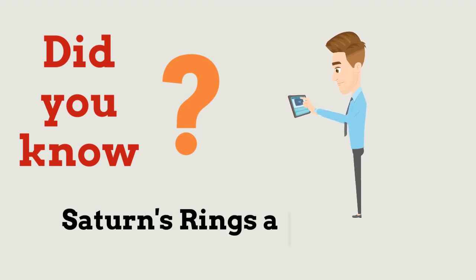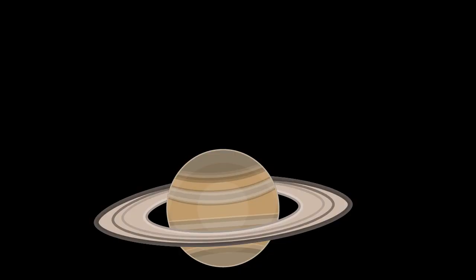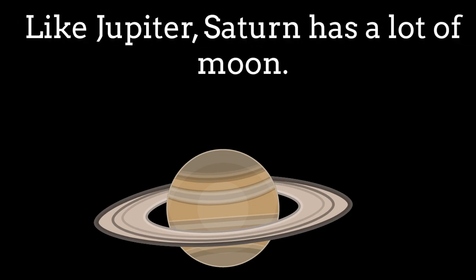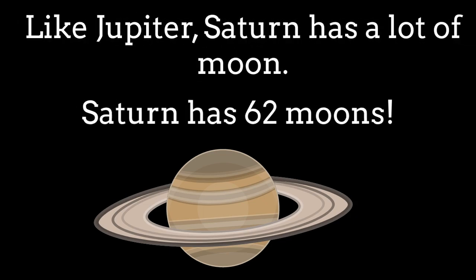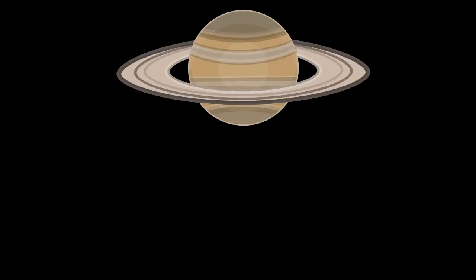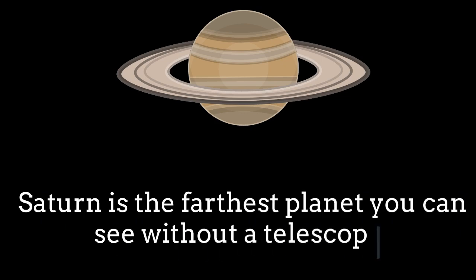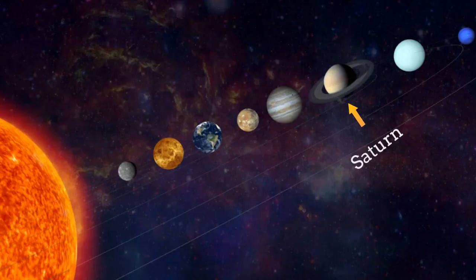Hey, did you know? Saturn's rings are made up of ice. Like Jupiter, Saturn has a lot of moons. Saturn has 62 moons. Saturn is the farthest planet you can see without a telescope. So, Saturn is the gas planet, 6th planet from the Sun. And it is in between Jupiter and Uranus.